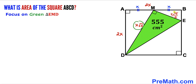To solve for X², we multiply both sides by the reciprocal of 5/4, which is 4/5. The 4s and 5s cancel, giving us X² = (555 × 4)/5. Dividing 555 by 5 gives 111, and 111 times 4 is 444. Therefore X² equals 444.